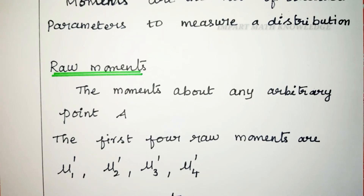The moments about any arbitrary point A, we call it as raw moments. The first four raw moments are mu1 dash, mu2 dash, mu3 dash, and mu4 dash.